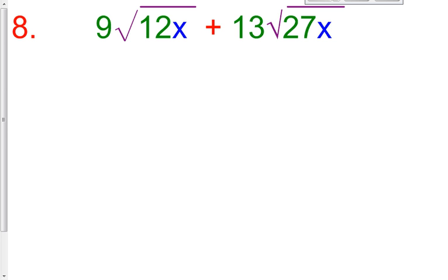In the same way, for number 8, that same rule applies. Right now, I can't add 9 and 13 because my radicals aren't exactly the same. The square root of 12x and the square root of 27x, they are obviously not the same. So, I can only add if I can get my radicals exactly the same. So, what I have to do first is I have to simplify as far as I possibly can.